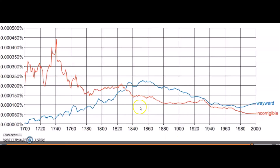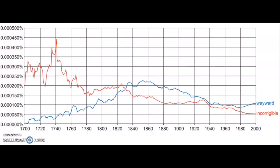On the other hand, the term 'incorrigible', which refers to a person or behavior that is difficult or impossible to correct, may have become less commonly used and replaced by alternative terms. 'Wayward' may be more versatile and applicable in different contexts, such as describing behavior, actions, or even physical objects. 'Incorrigible' is often used in more specific contexts, such as describing someone's character or an unchanging negative trait, and may be less commonly used in everyday conversation.